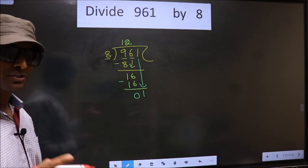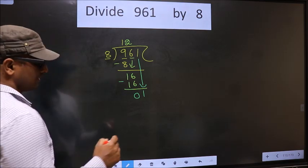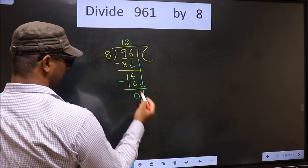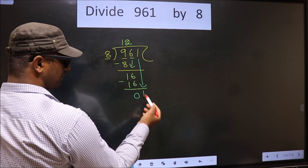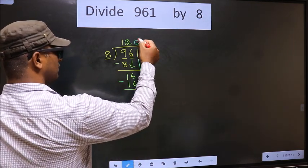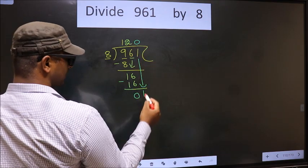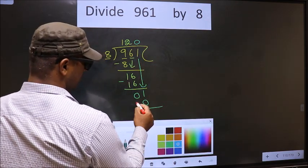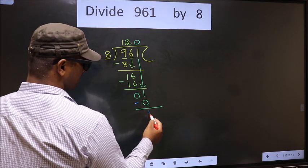Instead, what you should think of is, what number should we write here? If we write 8 here, that is larger than 1. So what we do is, we take 0 here. So 8 into 0 is 0. Now you subtract. 1 minus 0, 1.